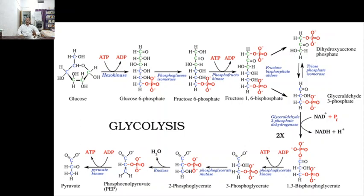Once the conversion to glucose-6-phosphate takes place, glucose cannot move out of the cell — phosphorylation makes it impermeable to the plasma membrane. Glucose-6-phosphate serves as the starting point for entering the glycolytic pathway, the pentose-phosphate pathway, or glycogen synthesis. Four mammalian isoenzymes of hexokinase — type 1 to type 4 — have been identified. The type 4 isoenzyme is often referred to as glucokinase and is found in hepatocytes. Glucokinase has a higher Km value for glucose than other isoenzymes.